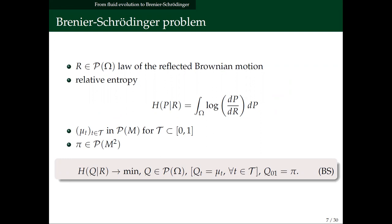The Brenier-Schrödinger problem in my framework: R is the law of the reflected Brownian motion; I denote H the relative entropy with respect to R. Given a family of measures μ_t for t in [0,1] and an endpoint measure π — a measure on M squared — the Brenier-Schrödinger problem is the minimization of the relative entropy with the marginal constraint q_t equals μ_t and q_{0,1} equals π.